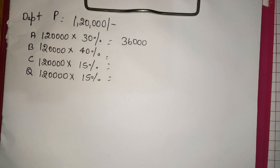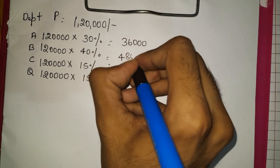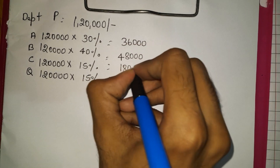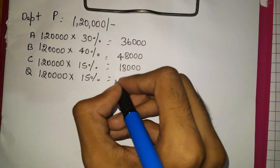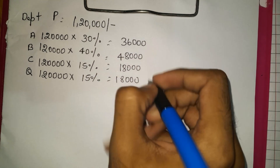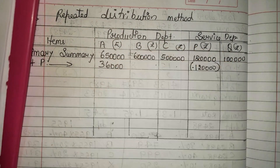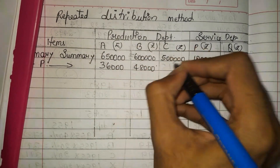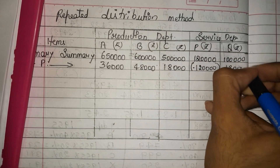Next, 1,20,000 into 40% will be 48,000 for B department. Next, 1,20,000 into 15% will be 18,000 for C department. And 1,20,000 into 15% will be 18,000 for Q department. So we write: A department 36,000; B department 48,000; C department 18,000; Q department 18,000.